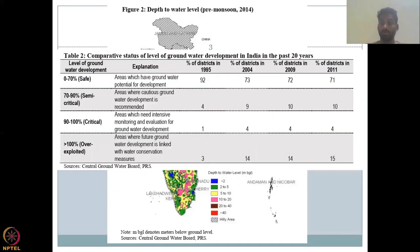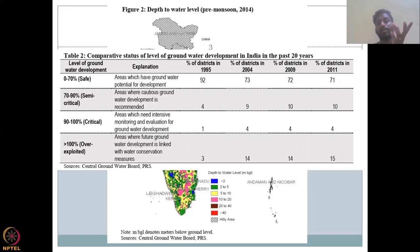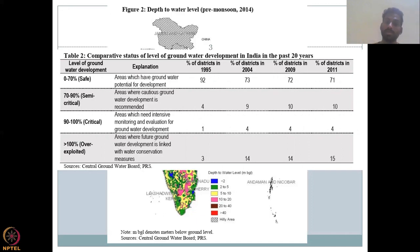Based on the groundwater level data, the Central Groundwater Board takes water level measurements four times a year: pre-monsoon, post-monsoon, winter, and summer. These four measurements per year give you a good picture of the spatial and temporal trend of groundwater levels.